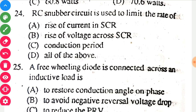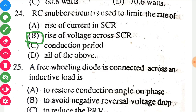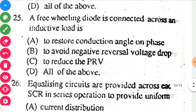Moving towards the 24th question: an RC snubber circuit is used to limit the rate of — snubbers are energy absorbing circuits used to suppress voltage spikes. The correct option is B: rate of rise of voltage across the SCR.